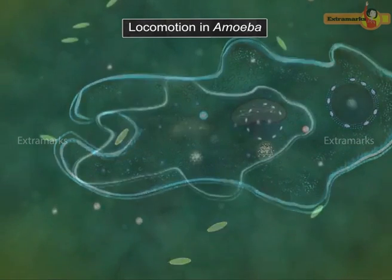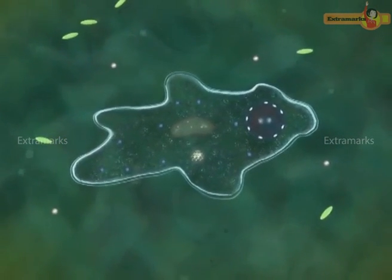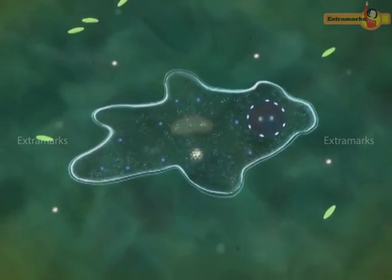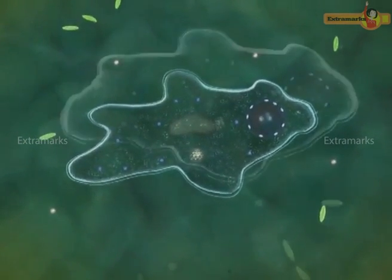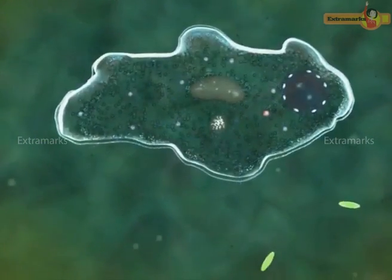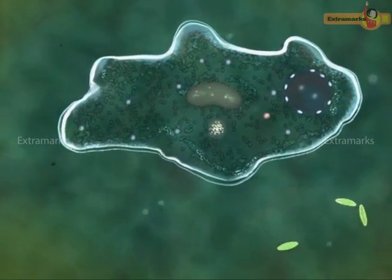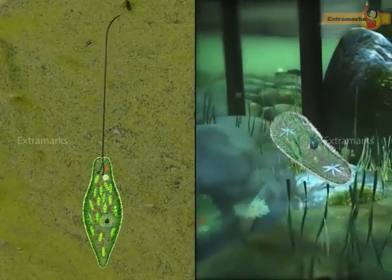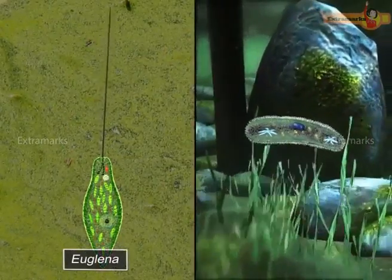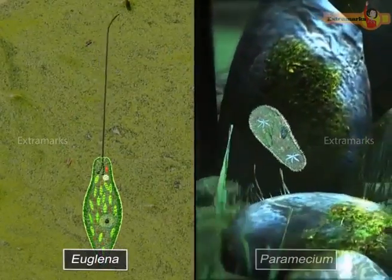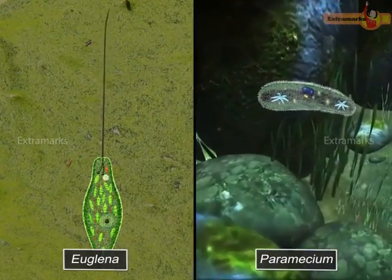Formation of pseudopodia in any direction causes an amoeba to move in that direction. A pseudopodium is formed by the streaming movement of cytoplasm. Microorganisms like euglena and paramecium possess external organelles for locomotion.